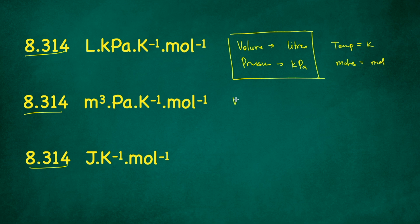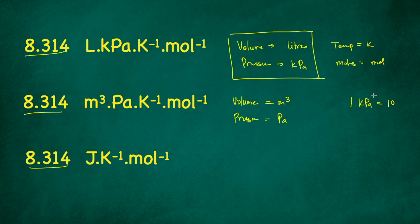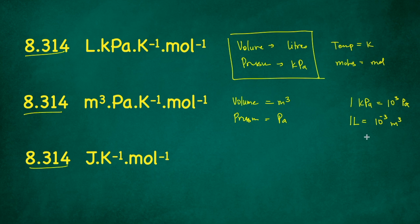Now if volume is in meter cubed and pressure is in Pascals, you again use 8.314. We know that 1 kilopascal = 10³ Pascal, and 1 liter = 10⁻³ meter cubed. So the 10³ factor from kPa to Pa and the 10⁻³ factor from liters to meter cubed cancel each other out, which is why the value of R remains 8.314 in both cases.